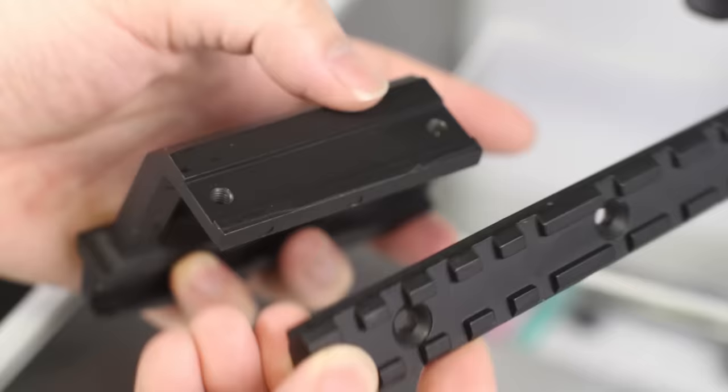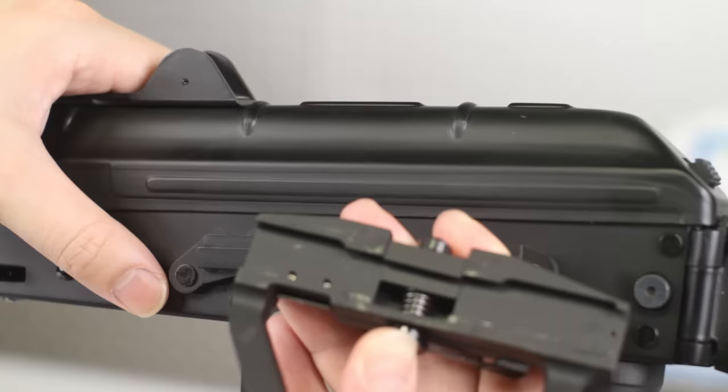Good thing the rail can be removed and flipped around with just two Allen screws. To install the mount, undo the quick-release lever, slide it onto the rail from the back, and close that lever.